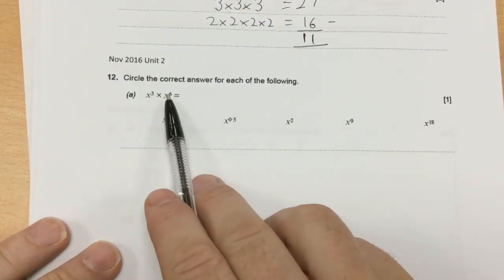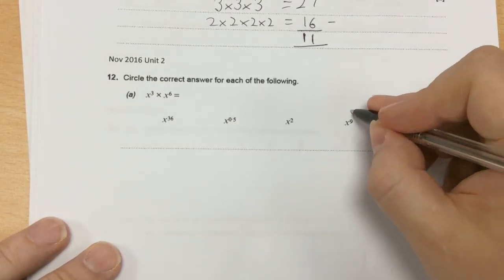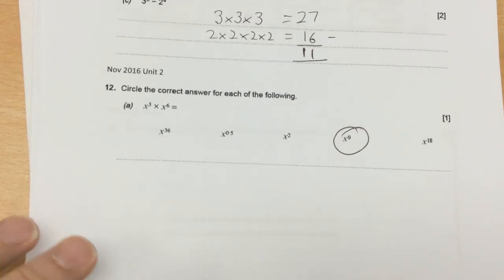The last one, whereas when we divided indices, you took them away, when you multiply, you add them. So 3 add 6 is 9, so the answer to that one would be x to the power of 9.